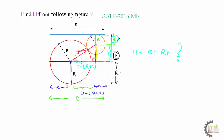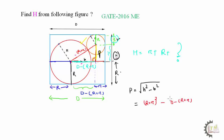Apply the Pythagorean theorem to this right angle triangle. The diagonal (hypotenuse) is R plus r, the base is D minus (R plus r), and we need to find the vertical height. Let the vertical height be P. Then P equals the square root of (R plus r) squared minus (D minus R plus r) squared. Now, to simplify this calculation, let X equal R plus r, so we can write P as the square root of X squared minus (D minus X) squared.